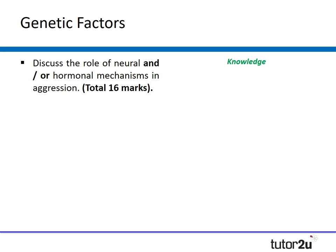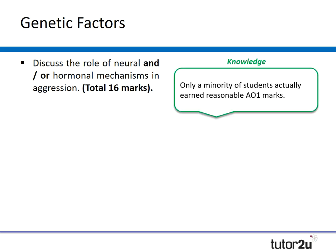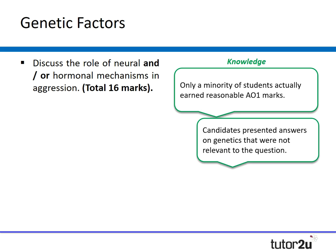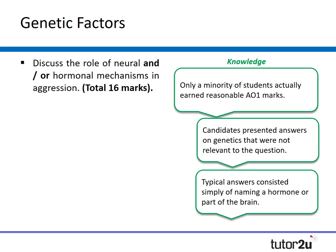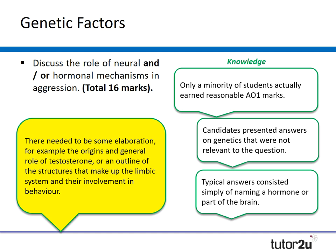The third question: discuss the role of neural and/or hormonal mechanisms in aggression. Only a minority of students earned reasonable AO1 marks. Candidates presented answers on genetics that were not relevant — the opposite problem to earlier. Typical answers simply named a hormonal part of the brain without elaboration. The examiner said there needs to be elaboration, for example on the origins and general role of testosterone, or an outline of the limbic system structures and their involvement in behaviour. Dedicated time needs to go to each of these biological explanations, as students really confuse genetics, neural, and hormonal mechanisms.